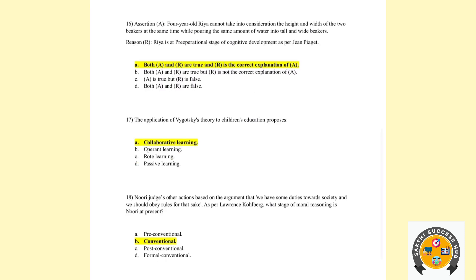Sixteenth question: A 4-year-old Rea cannot take into consideration both the height and width of two beakers at the same time while pouring the same amount of water into tall and wide beakers. This describes the pre-operational stage. So A and R are true and R is the correct explanation of A.